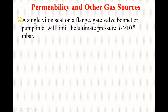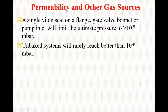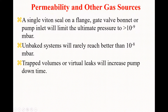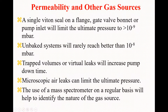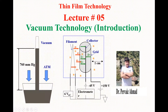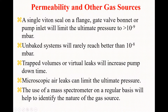A single wire seal on a flange gate, ball bonnet, or pump inlet will limit the ultimate pressure to 10 raised to power minus 9 millibar. An unbaked system will rarely reach better than 10 raised to power minus 8 millibar. Trap volumes and virtual leaks will increase pump downtime. Microscopic airways can limit ultimate pressure. Regular use of a mass spectrometer will help identify the nature of a gas source. That concludes this lecture on vacuum technology — see you in the next lecture.